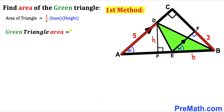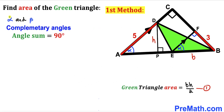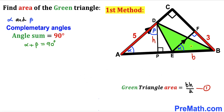We'll call this equation 1. Now let's assume alpha and beta are complementary angles — their sum equals 90 degrees. In triangle APD: angle alpha, angle 90°, so the third angle is beta. In triangle EFB: angle alpha, angle 90°, so the third angle is beta as well.